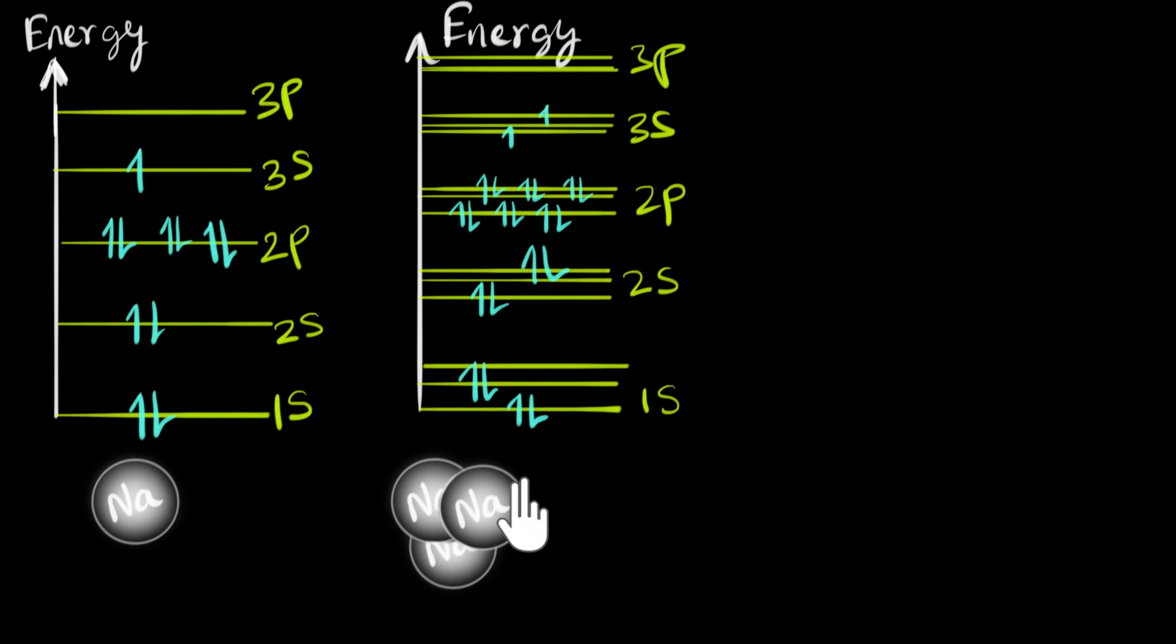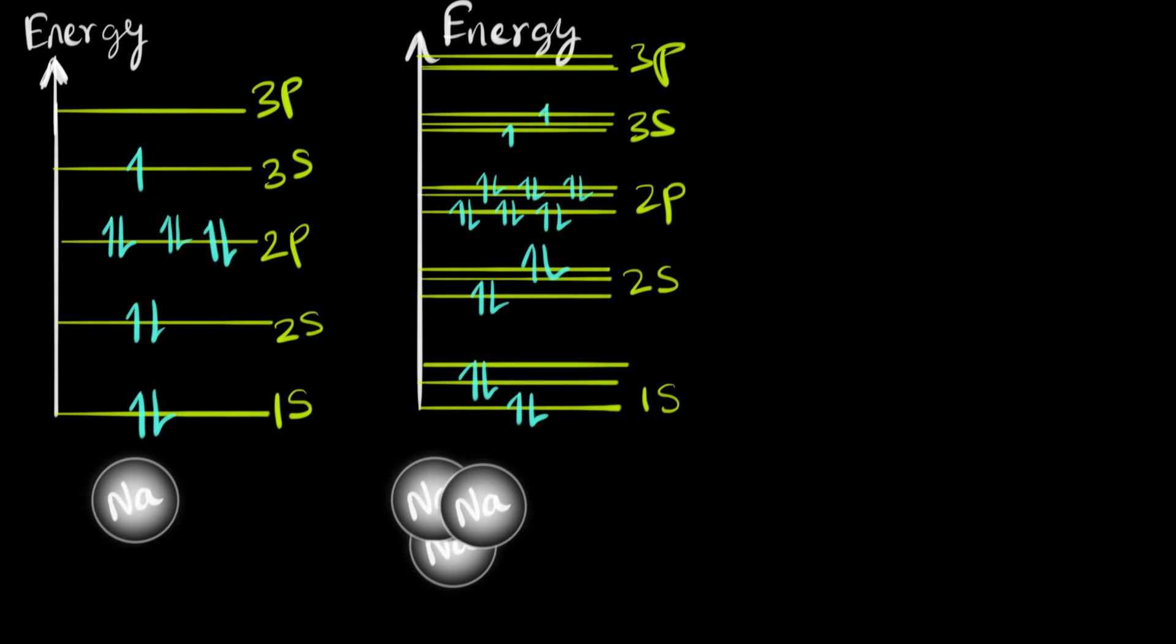The more atoms that we add, the more energy levels our molecular orbitals end up having. Eventually, if we have an entire solid made of sodium with something like 10^23 atoms packed together, then our molecular orbital of this entire solid will have 10^23 levels.